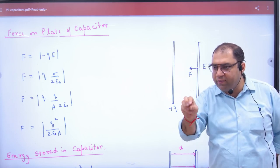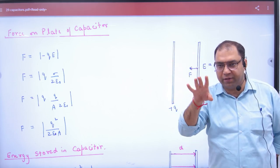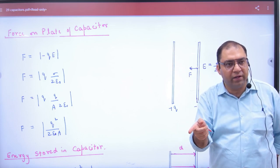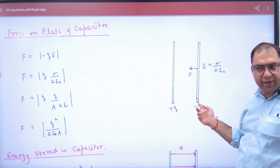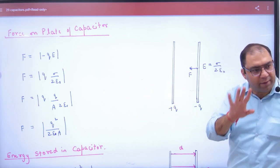So, it attracts. Koi bhi charge bhi apne upar E kabhi nahi lagata. Baas paas lagata hai, lekin apne upar kabhi nahi lagata. Toh ye plate, is pe E lagayegi, ye plate, is pe E lagayegi. Toh kya ye step yahan tak clear hai?